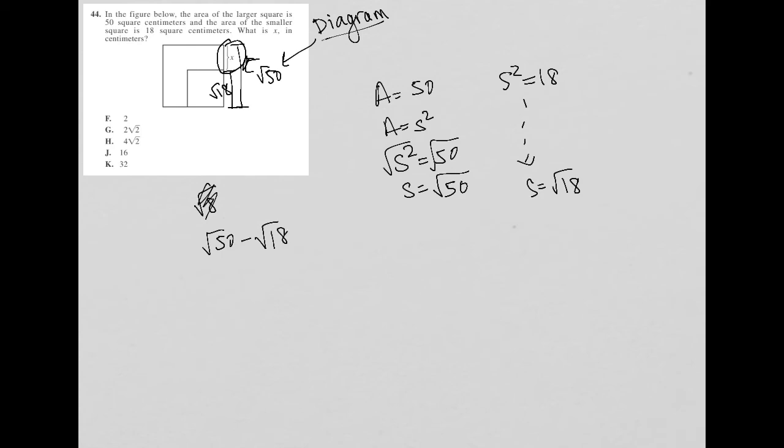And that's just not square root 32, by the way. I can't just subtract those. So what I need to do is simplify this. So the square root of 50 can be broken down into square root 25 times square root 2. I always use a perfect square when possible to break down. So this becomes 5 root 2.